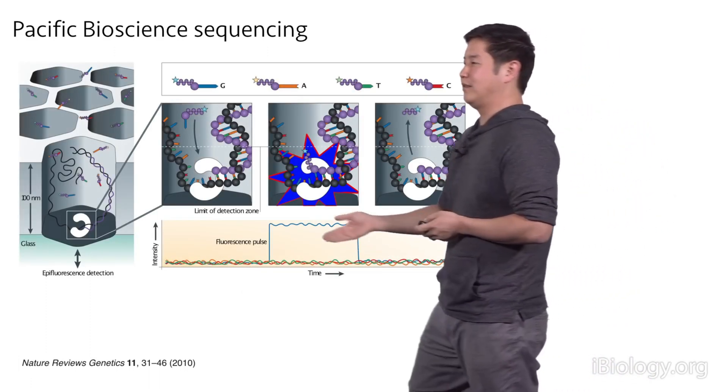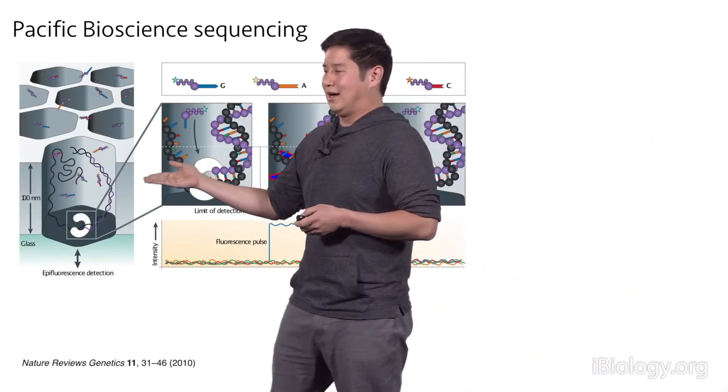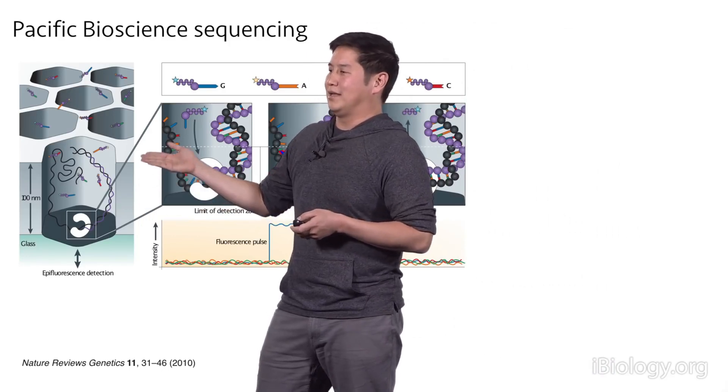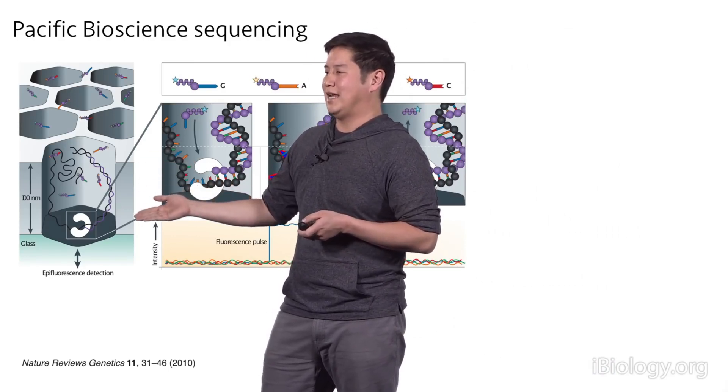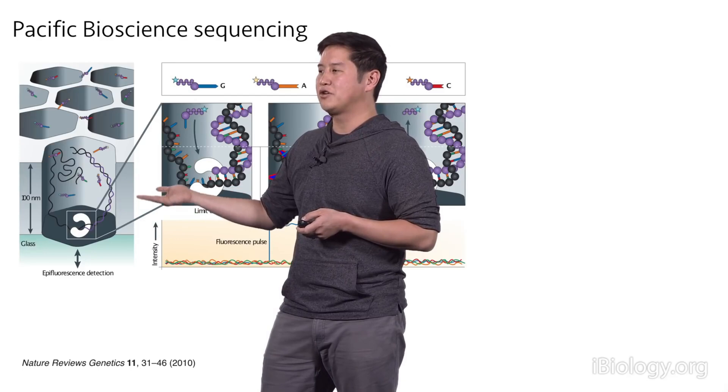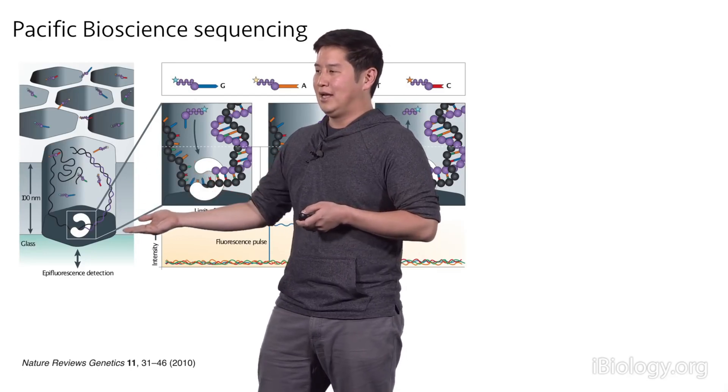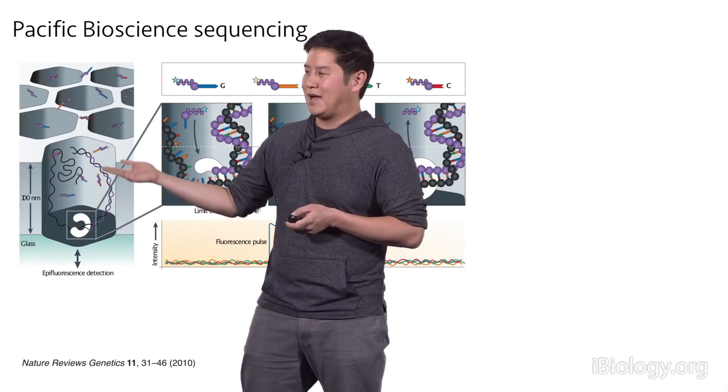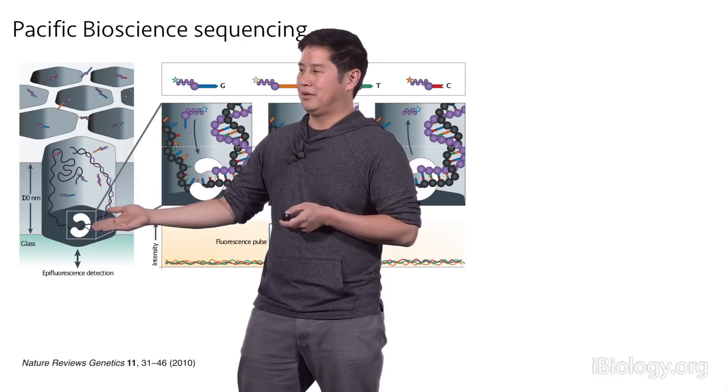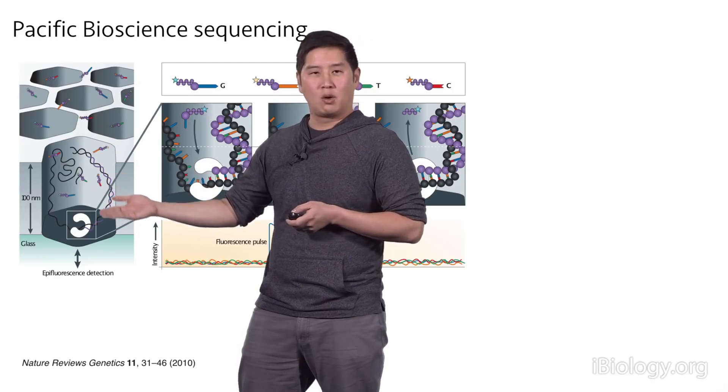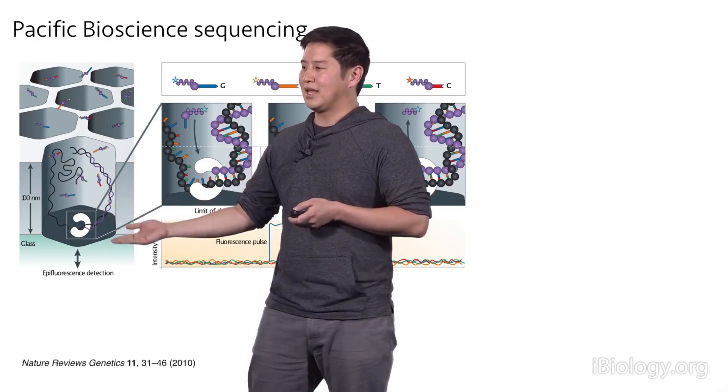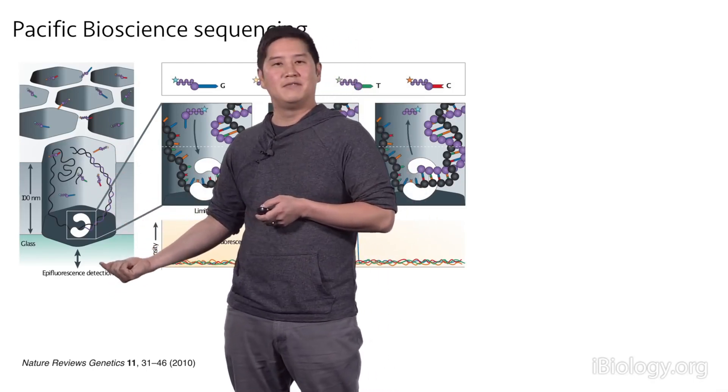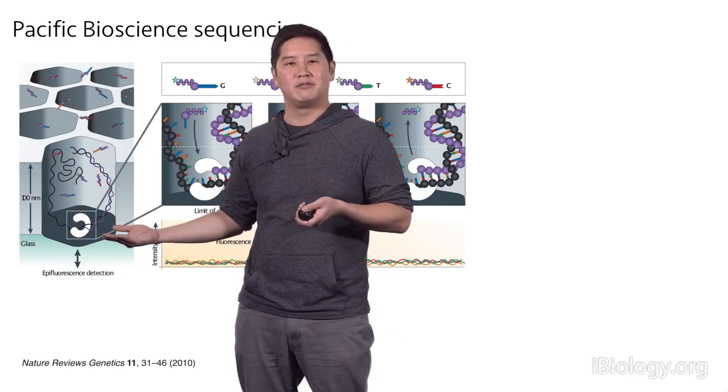And on the instrument, there's a really, really tiny array of wells into a plate. And these wells are only about 100 nanometers in height. At the bottom of each of these wells is a DNA polymerase. And what happens is a template molecule is bound to the polymerase, and then it starts incorporating those modified bases. And there's a camera at the bottom that's taking the video that's monitoring this reaction in real time.